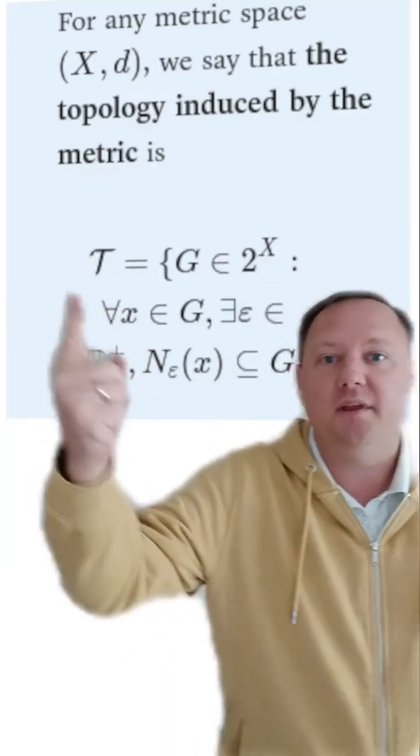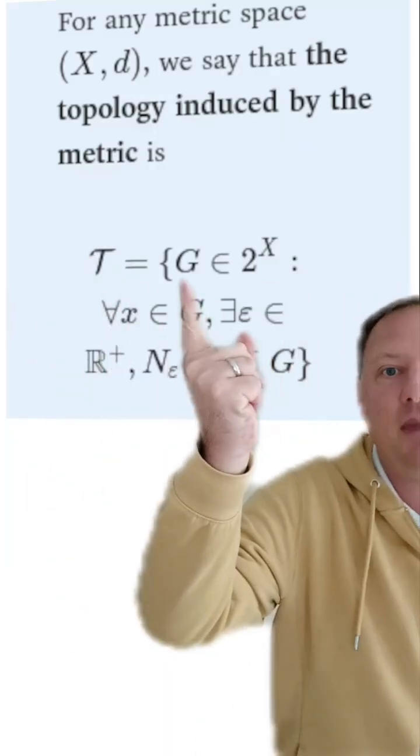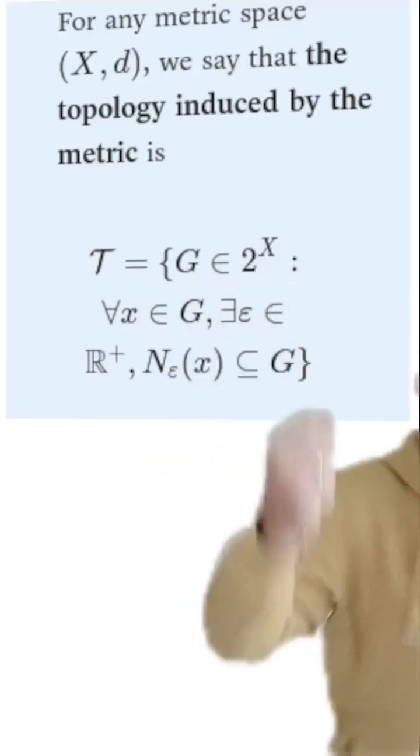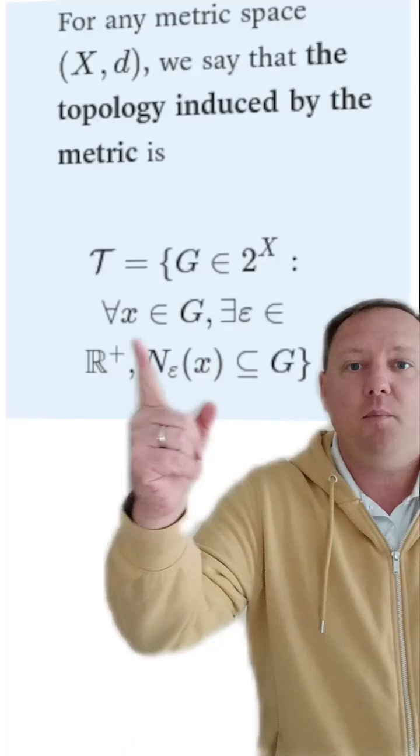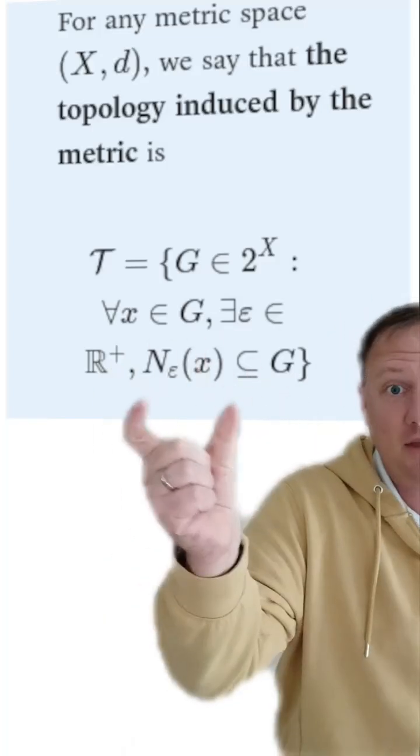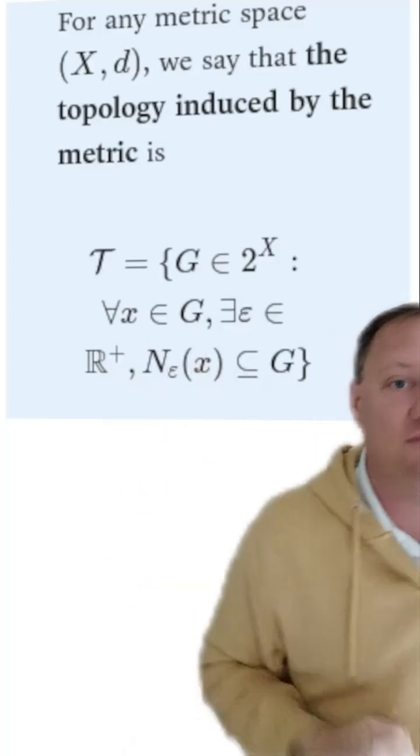So here's how we form it. We're going to form this cursive T, and it's going to be made up of all of the subsets of X. So if G is an element of the power set, it's a subset of X, and every point inside of that G must have some neighborhood given by the distance metric, which stays inside of G.